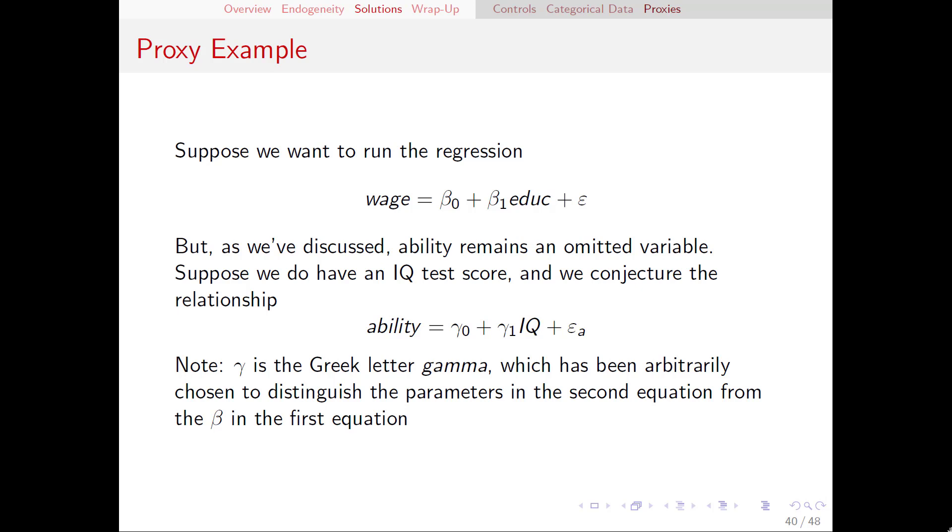As we discussed before, ability is an omitted variable here because ability is correlated with both years of education and with wage. Unfortunately though, ability is difficult to measure. Ability is more of an abstract concept that we can't exactly measure, so there's no way to fully control for ability. What we can do though is find a proxy for ability.